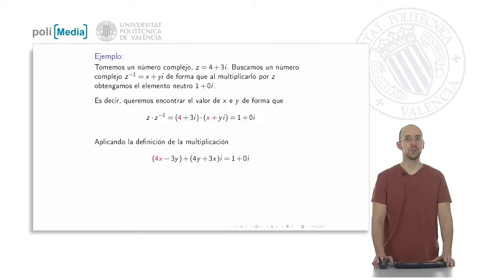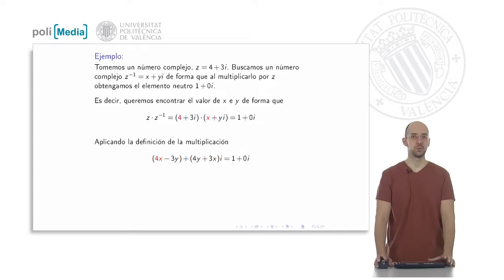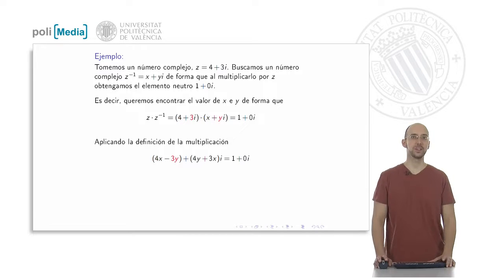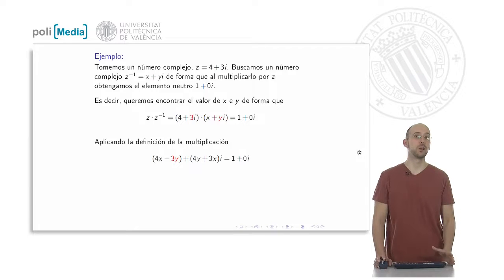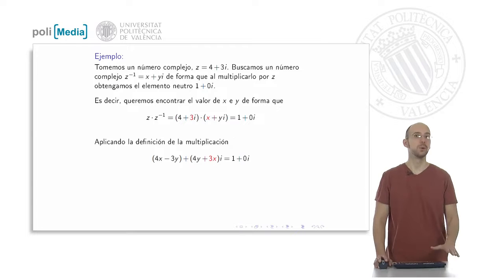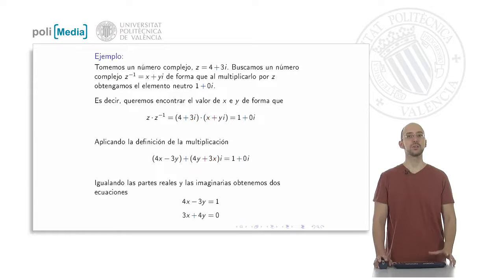To isolate x and y, we multiply those two complex numbers and then equalize. Applying the formula for the product of complex numbers: we multiply the real part of the first by the real part of the second, giving 4x, and the imaginary parts give minus 3y — we can't simplify further, so we leave it as 4x and 3y. Then we do the cross products: real part of the first with imaginary part of the second, and imaginary part of the first with real part of the second.